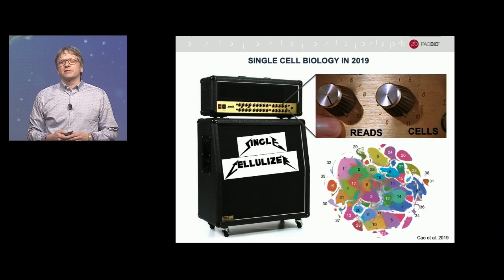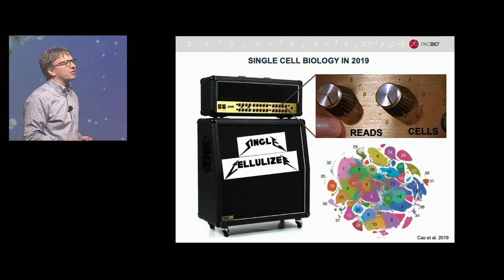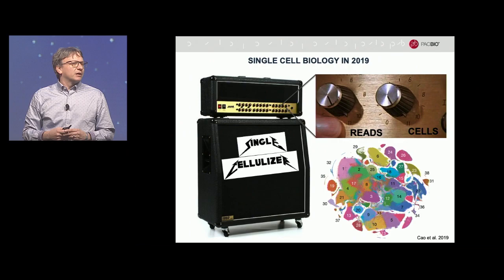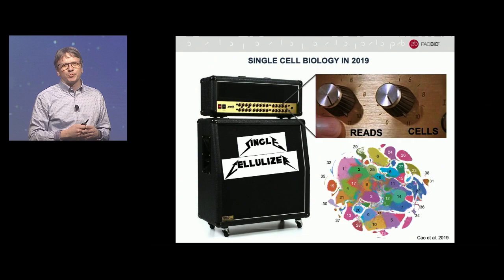It's no secret to this group that no matter which technology you're using for single cells, the knob being turned to 11 now is the number of cells, or the number of reads that go along with those cells. A study was published last week using the SkyRNASeq method with 2 million cells, and this has been transformative for complex tissues such as the brain and especially for developmental biology.